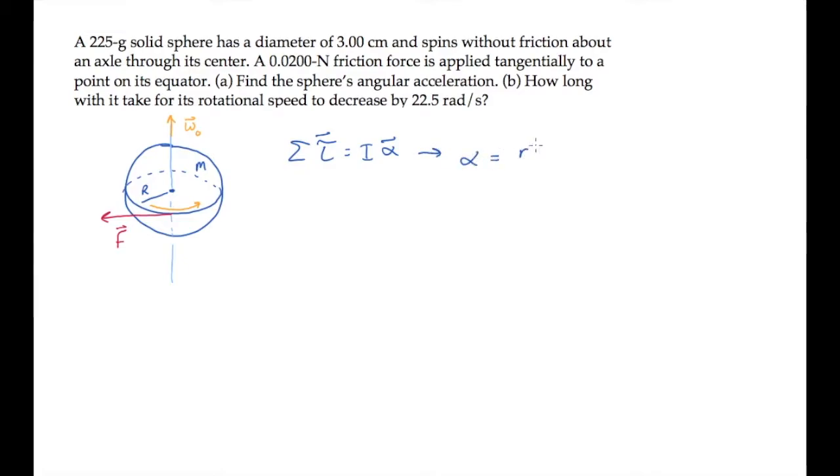It equals the torque due to the frictional force F divided by the moment of inertia. The torque is RF sine of phi, where R is the length of the vector from the origin, that's the center of the sphere, to the point where the force is applied. And phi is the angle between the R vector and the force vector. That's 90 degrees, and sine of 90 is 1.